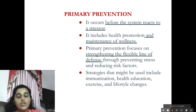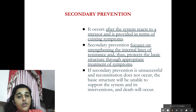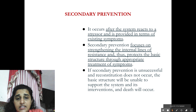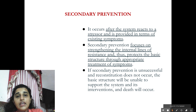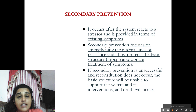Examples of primary prevention include immunization, health education, exercise, and lifestyle changes. Secondary prevention occurs after the system reacts to a stressor and is provided in terms of existing symptoms. It focuses on strengthening the internal lines of resistance and protects the basic structure through appropriate treatment of symptoms. In other words, the flexible line of defense has been breached by stressors, the system is now exposed to illness, and secondary prevention strengthens the internal lines of resistance.